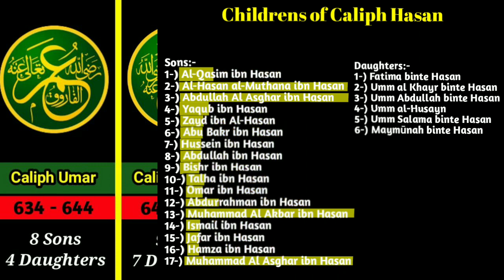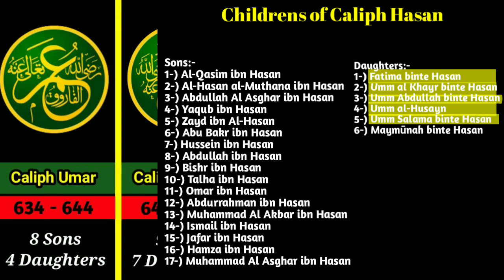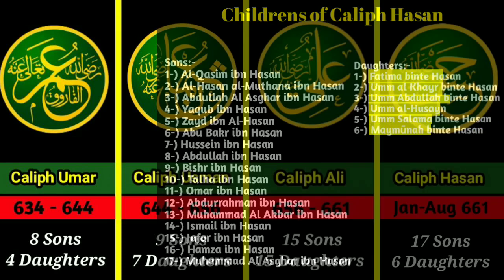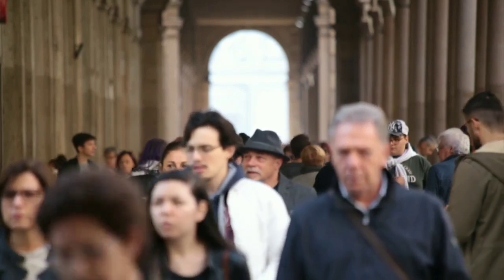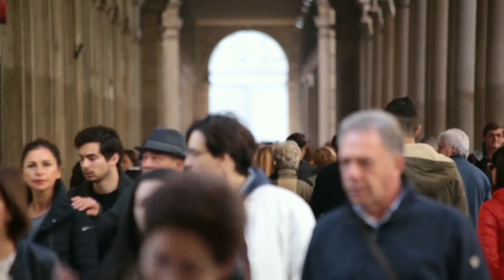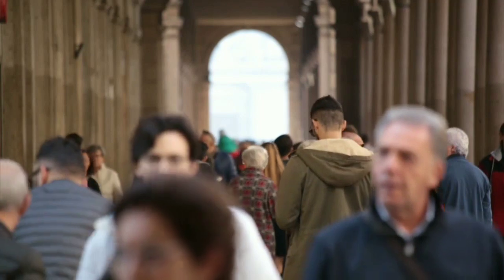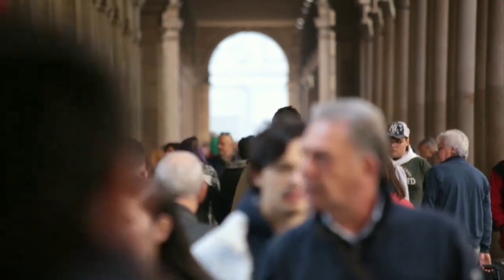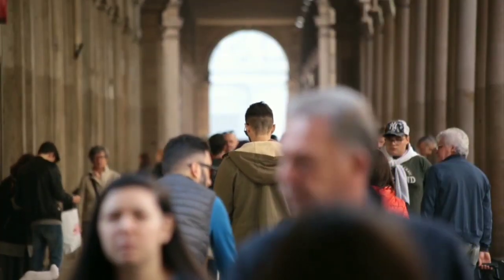And his daughters' names were: Fatima binti Hassan, Um-Al-Kir binti Hassan, Um-Abdullah binti Hassan, Um-Al-Hussein, Um-Salama binti Hassan, and Maimuna binti Hassan. I hope you guys liked this video. Tell me in the comments what topic you want to see in the next video. Thanks for watching, and if you like this video don't forget to like, comment, share, and subscribe.